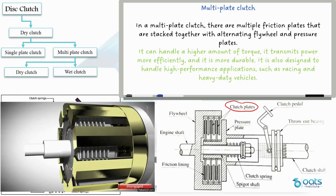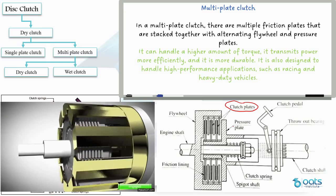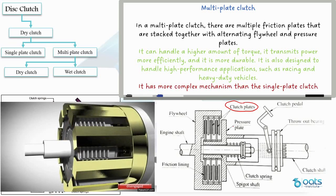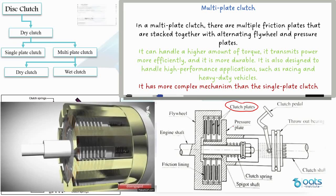In a wet clutch, the clutch plates are bathed in oil, which helps to reduce friction and dissipate heat. In a dry clutch, the clutch plates are not immersed in oil, which makes them more prone to wear and tear. The only drawback of multi-plate clutch is that it has a more complex mechanism than the single plate clutch, but it is also more efficient, durable and can handle higher amounts of torque.